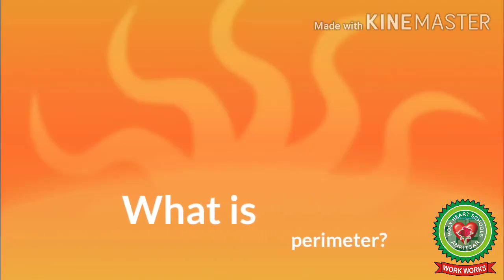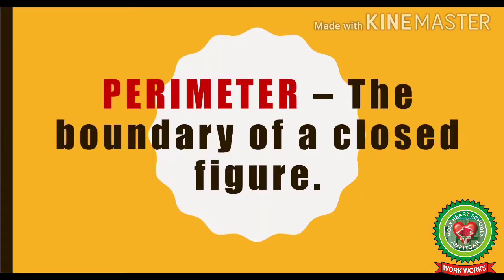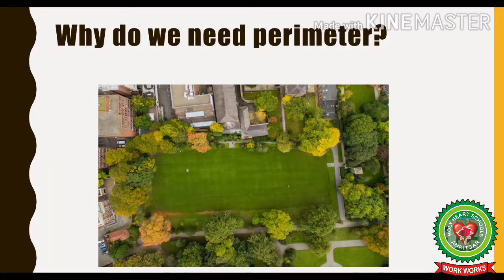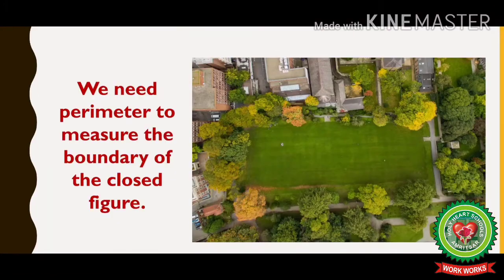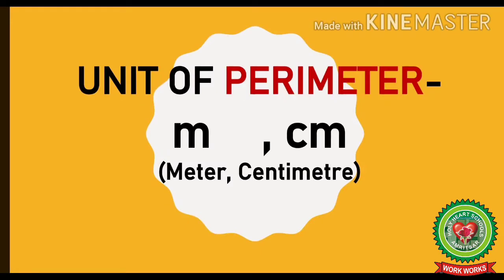What is perimeter? Perimeter is the boundary of a closed figure. We need perimeter to measure the boundary of the closed figure. The unit of perimeter is meter or centimeter.